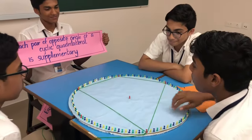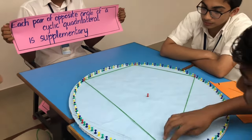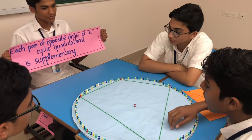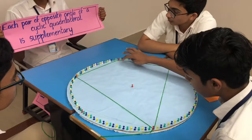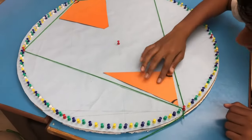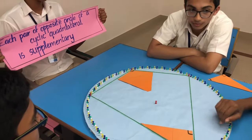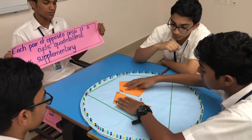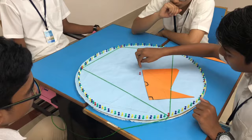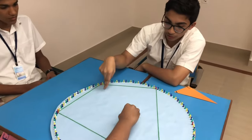Last but not the least: each pair of opposite angles of a cyclic quadrilateral is supplementary. A quadrilateral with all vertices on the circle is known as a cyclic quadrilateral. This is the measurement of this angle and this is the measurement of the opposite angle. As the theorem says, the sum of the opposite angles is supplementary — after joining them, we get a straight line of 180 degrees. So in a cyclic quadrilateral, opposite angles are supplementary.